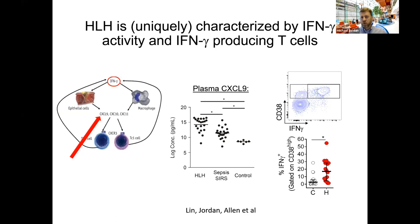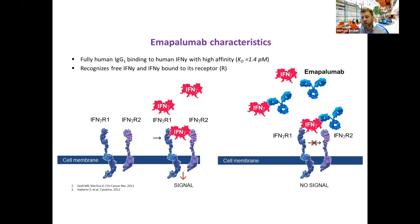To really test the causal role of interferon gamma in HLH, you need neutralization studies like were performed in experimental animals. This was made possible by a monoclonal antibody called emapalumab — a fully human, high-affinity antibody that binds interferon gamma and prevents signaling. Unusually, it doesn't prevent interferon gamma from binding to its receptor, so in the presence of high levels of interferon gamma the antibody has a very short half-life because it binds the cytokine which then binds the receptor and is internalized and consumed. This leads to unusual dosing — typically twice a week in highly inflamed patients.